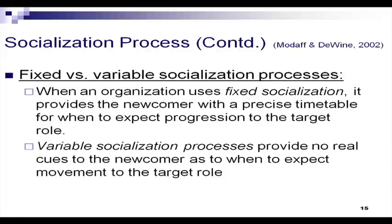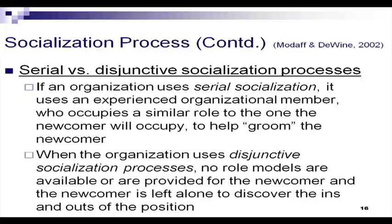Fixed socialization is similar to sequential but with a specific timeline. Variable socialization is similar to random — here the focus is on time; you don't know when your turn will come to become a fully recognized integral part of the organization, even if you have completed the necessary steps. Serial socialization involves mentors — you join and are assigned a formal mentor who guides you through processes. Disjunctive socialization means there are no role models; you are left alone to discover the ins and outs of the position.